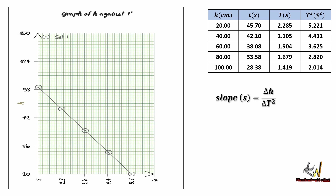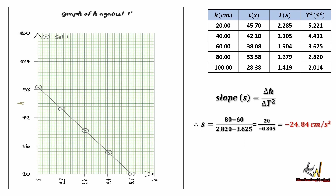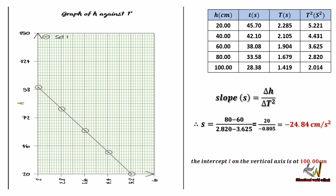To find the slope of the graph: slope = change in vertical axis ÷ change in horizontal axis. Taking corresponding values from the table: (80 − 60) ÷ (2.820 − 3.625) = 20 ÷ (−1.345) ≈ −24.84 cm per second squared. The unit of the slope is centimeters per second squared because h is in centimeters and T² is in seconds squared.